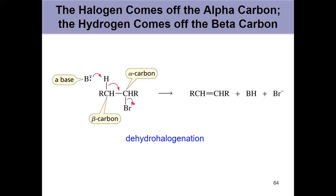Some notation is important. The new pi bond forms going to the carbon that had the leaving group. That carbon directly bonded to the leaving group is called the alpha carbon. Dealing with halogens as leaving groups in chapter nine, the carbon directly bonded to the halogen is the alpha carbon. Exactly one sigma bond away is what's called a beta carbon. A hydrogen comes off the beta carbon, and the leaving group departs the alpha carbon. It's possible to have multiple beta carbons.